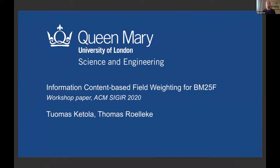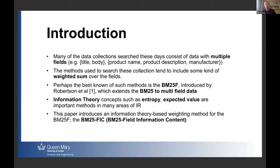I'm going to talk about a recent paper I wrote with Thomas Roelke, my supervisor, for a workshop at SIGIR called 'Information Content-Based Field Weighting for BM25F.' A lot of data collections we need to search nowadays — within companies or otherwise — tend to have multiple fields per document, such as product name and product description. Many common methods for multi-field retrieval tasks use some kind of weighted sum over the fields. Probably the best known is BM25F, which is basically a multi-field version of the BM25 retrieval model.